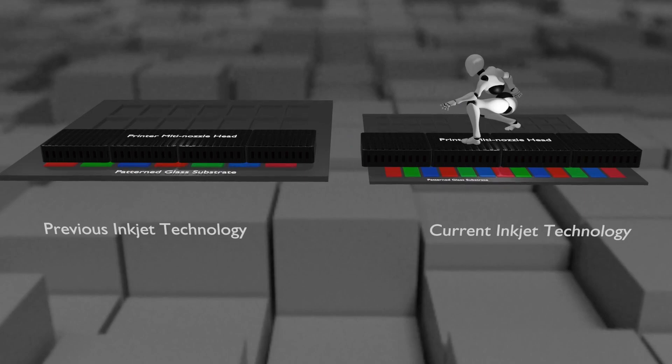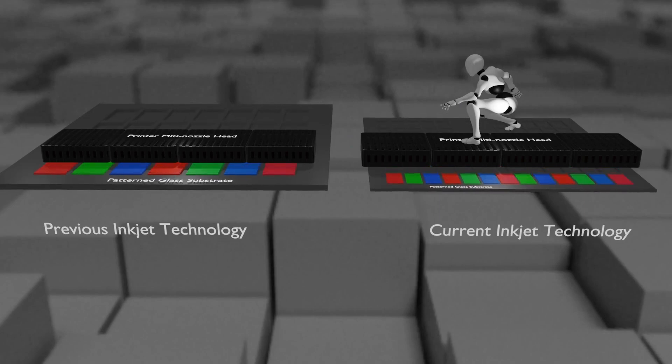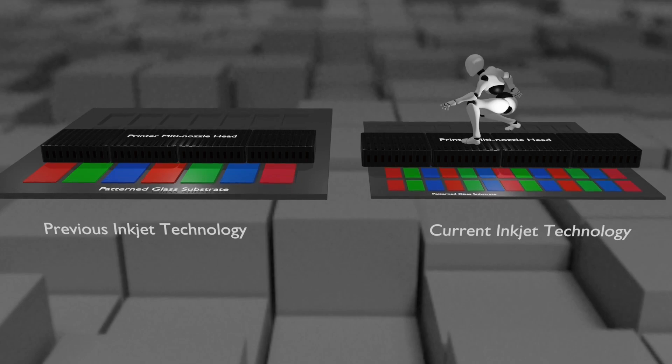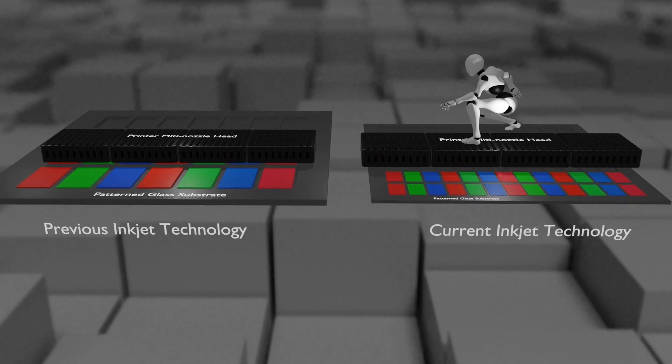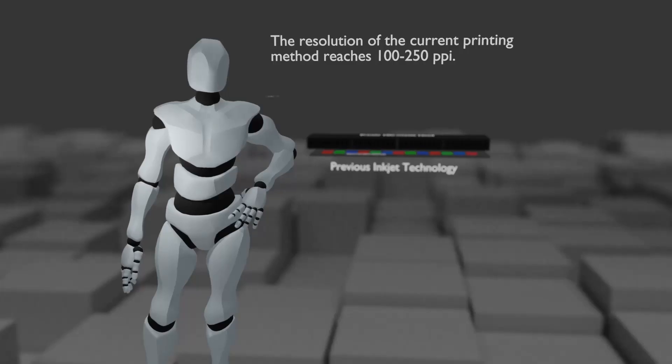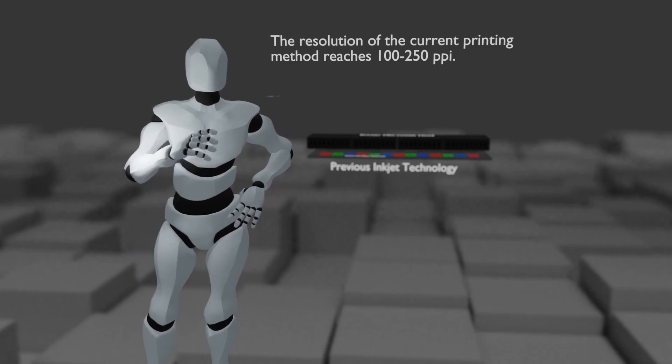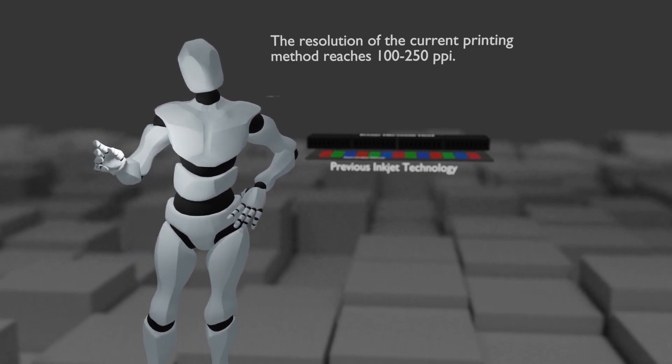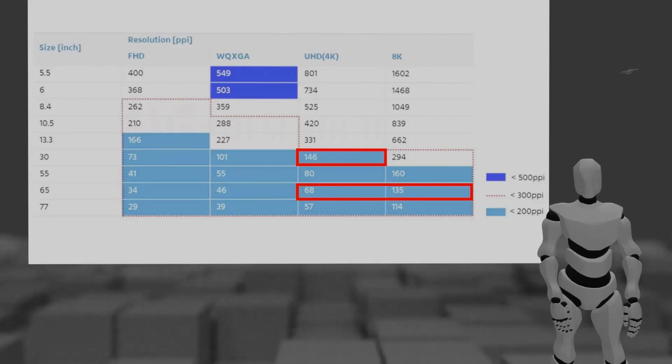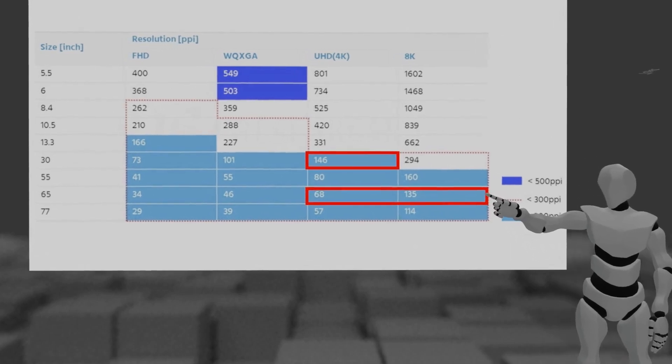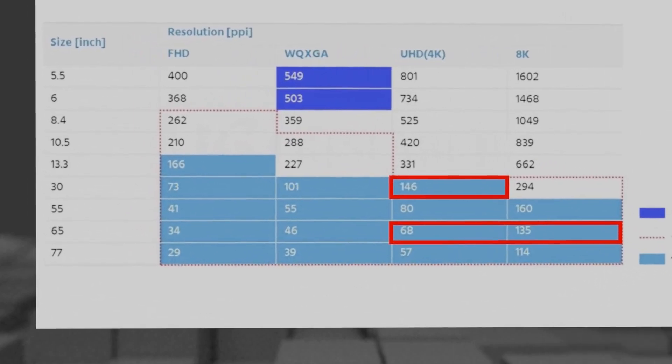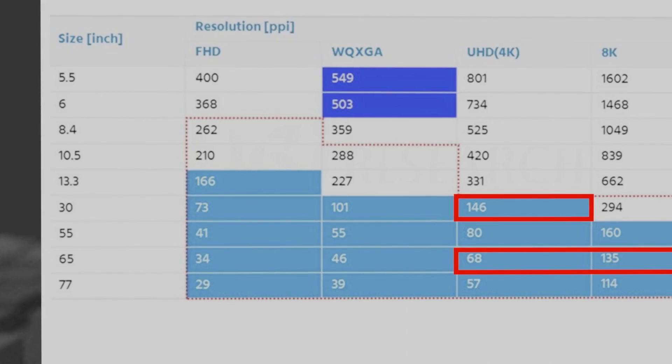Printing type OLED has been able to realize a considerably higher level of resolution than in the past due to the continuous development of inkjet heads. The level that has been reached is possible with a resolution of about 100-250 pixels per inch, that is, about 200 ppi. As shown in the table, only 68 ppi and 135 ppi are required to secure 4K and 8K resolution in the 65-inch panel size, so the printing method can be applied sufficiently.